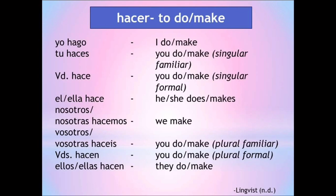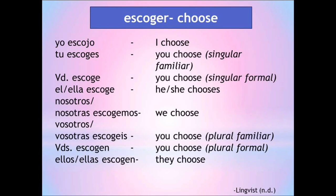Next is hacer, which means 'to do' or 'to make.' Yo hago (I do/make), tú haces (singular familiar), usted hace (singular formal), él/ella hace, nosotros/nosotras hacemos, vosotros/vosotras hacéis (plural familiar), ustedes hacen (plural formal), ellos/ellas hacen. Next is escoger, which means 'to choose.' For verbs that end in -ger or -gir, the g changes to a j in the yo form, and it is pronounced as yo escojo (I choose). Tú escoges (singular familiar), usted escoge (singular formal), él/ella escoge, nosotros/nosotras escogemos, vosotros/vosotras escogéis (plural familiar), ellos/ellas escogen (they choose).